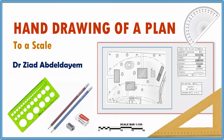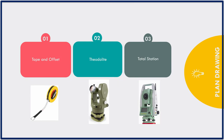Hello everybody and welcome to this new session which is about drawing a plan of a survey area by hand to a specific scale. So let's start. If you surveyed an area using tape and offset method, theodolite, total station, or any other surveying method and you collected a lot of measurements, your aim is to produce a plan to a scale based on all of these measurements. This is the aim of today's session.